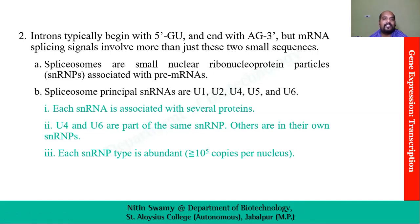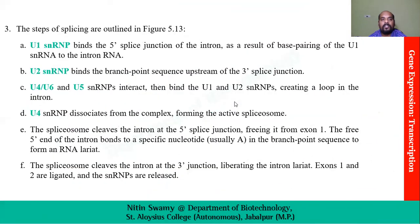Introns typically begin with a 5' GU and end with an AG sequence at their 3' splice site. But mRNA splicing signals involve more than just these two signals. Spliceosomes are small nuclear ribonucleoprotein particles, also known as snRNPs, associated with pre-mRNAs. The principal snRNAs of the spliceosome are U1, U2, U4, U5, and U6.